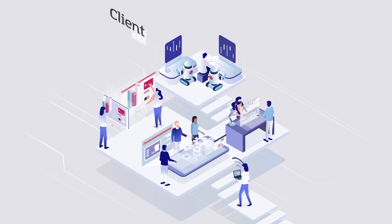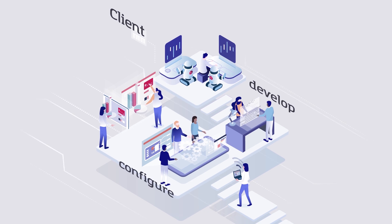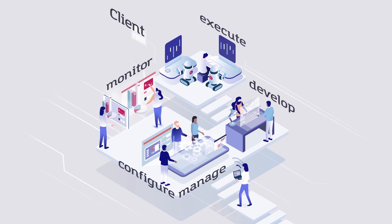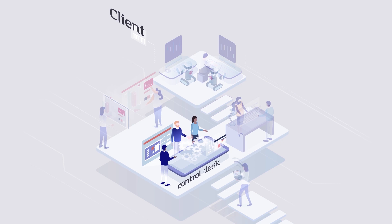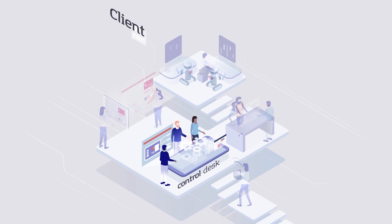The client tools consist of components used to develop, configure, manage, and monitor, and most importantly, execute process automations. The control desk is used by admin-level users to centrally configure and control all aspects of Process Robot and manage the distribution of processes and robot workload across the enterprise.